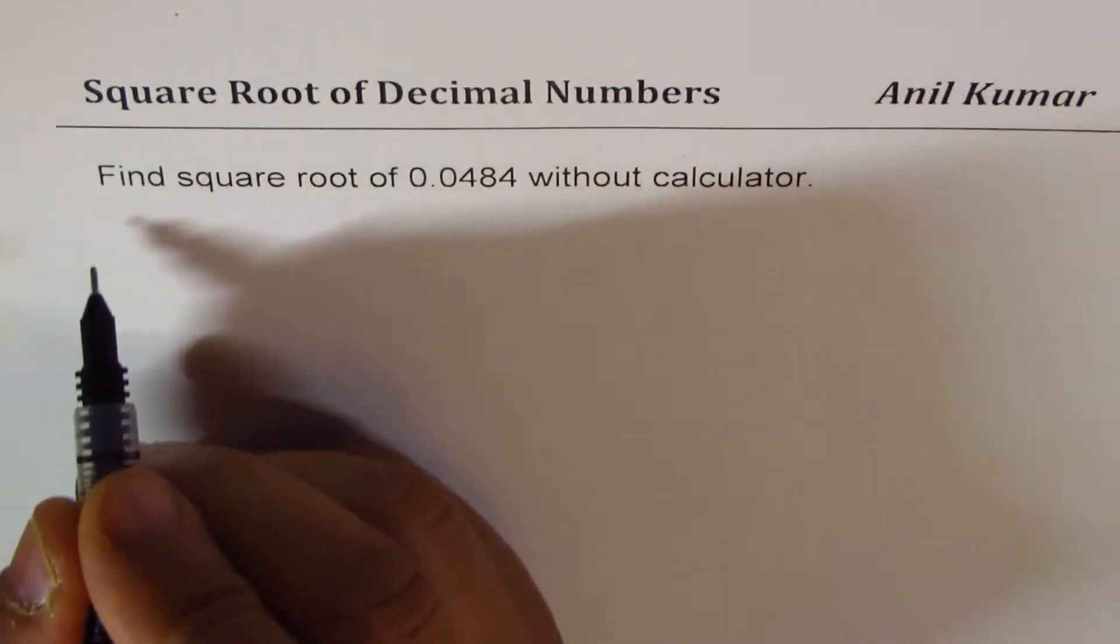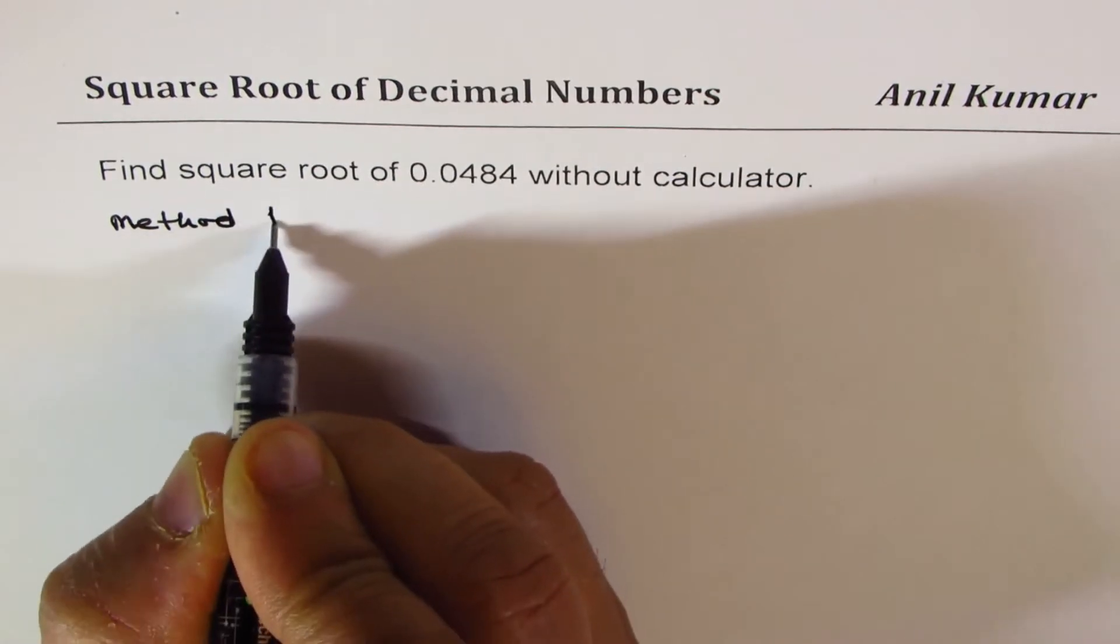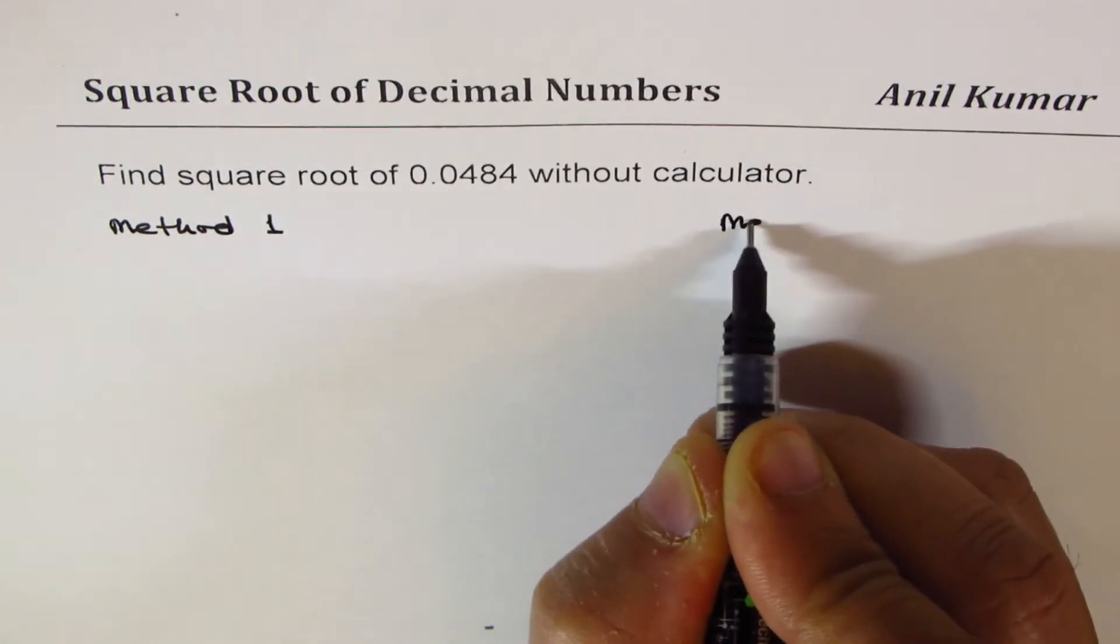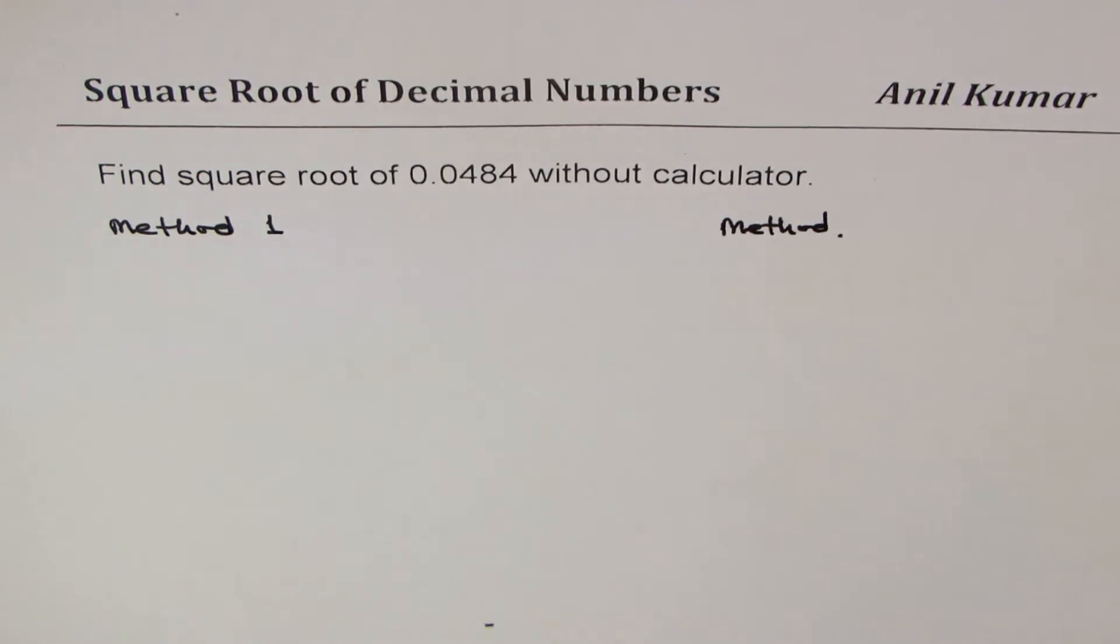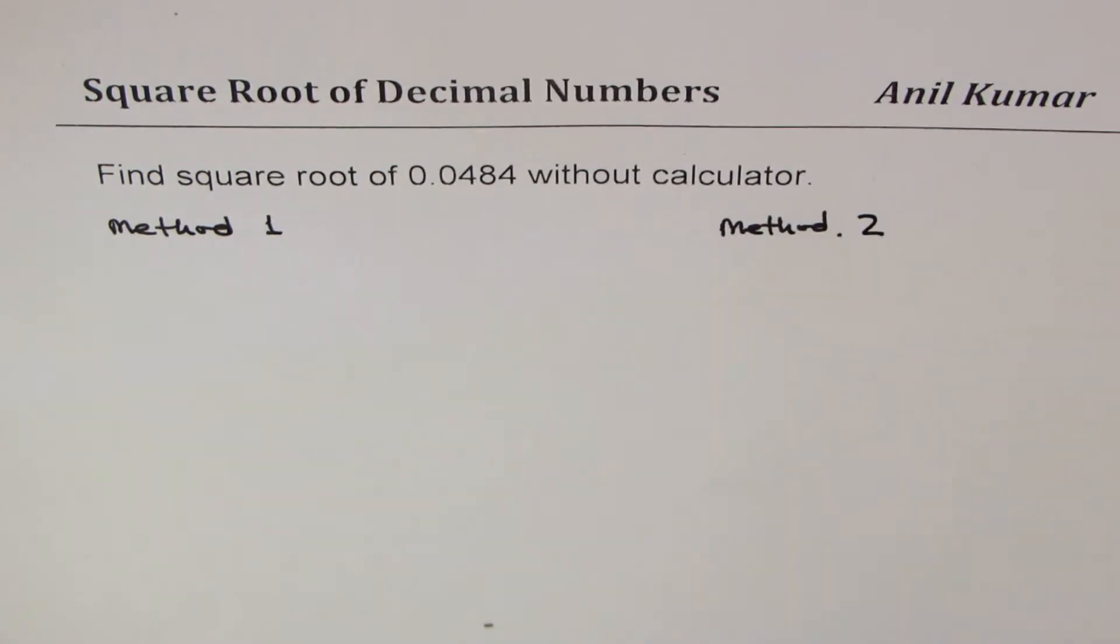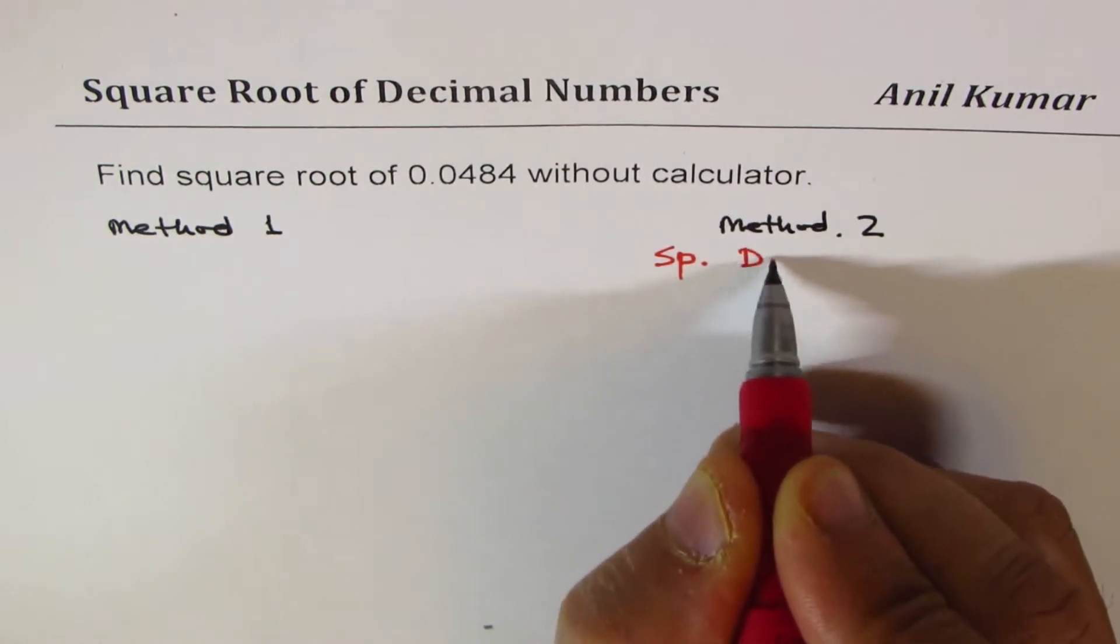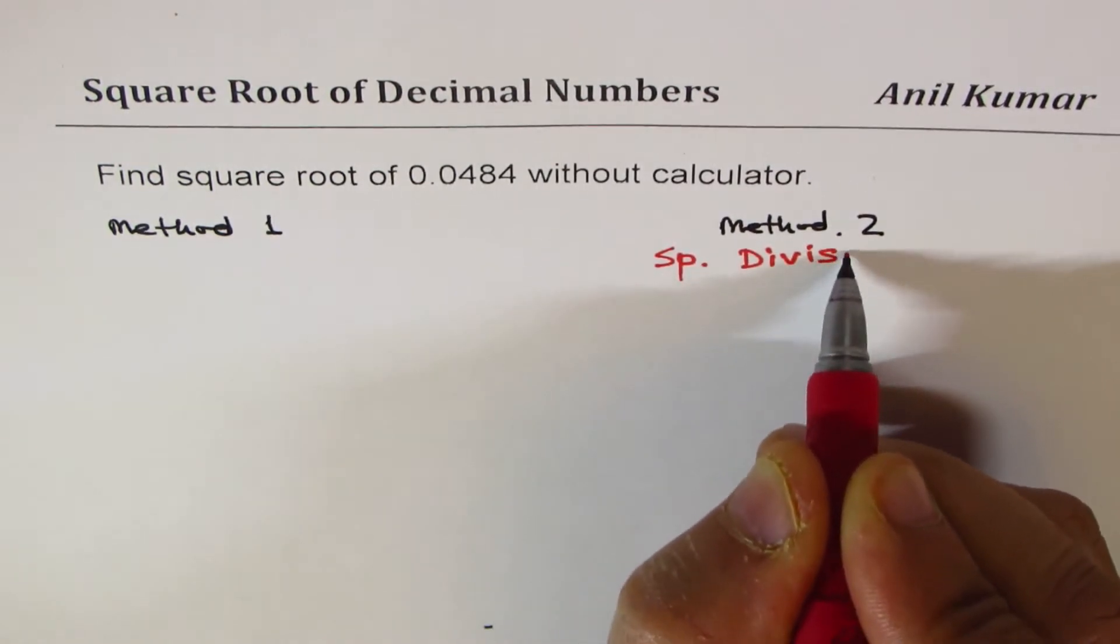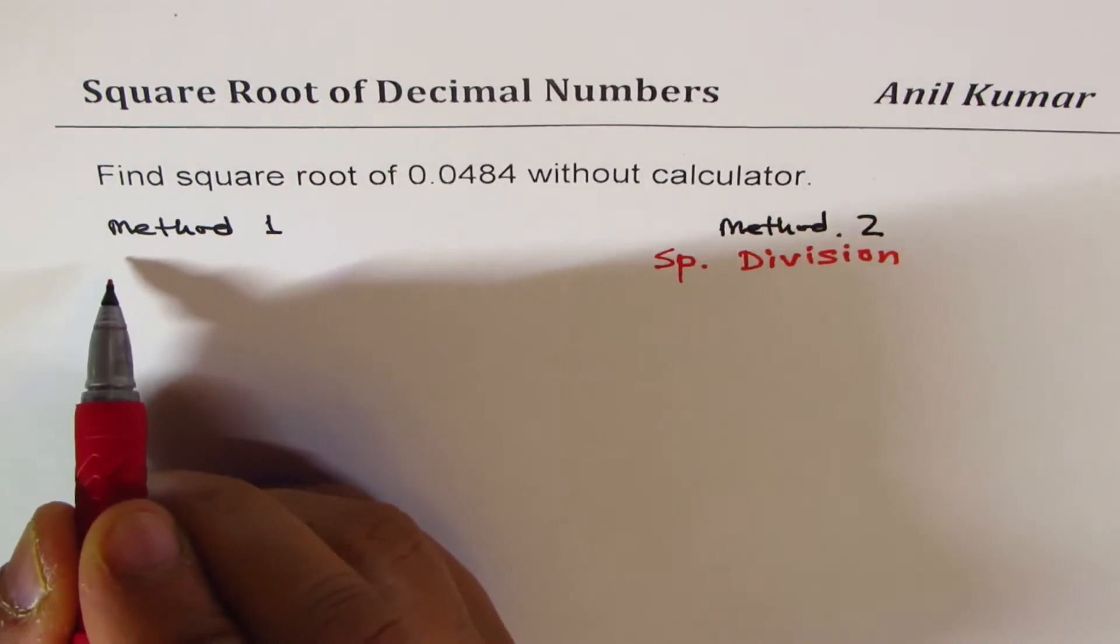We are going to find the square root using two methods. Method 1 and Method 2. Method 2 will be my popular method which is special division. Method 1 will be using estimate.